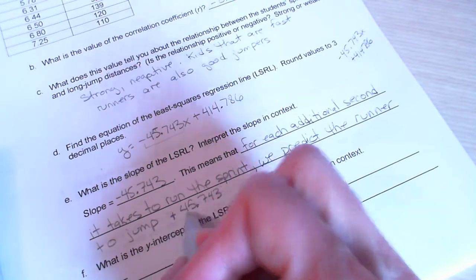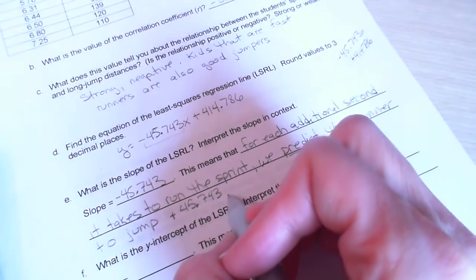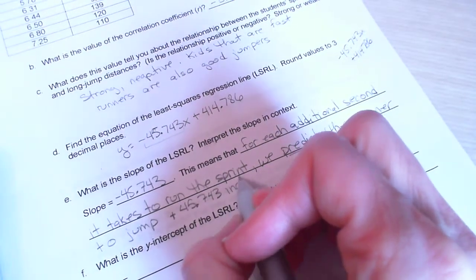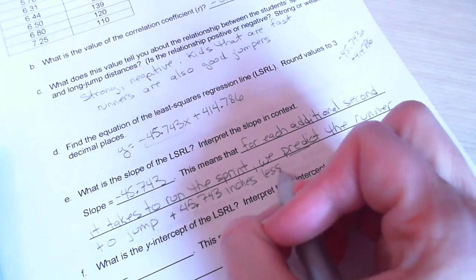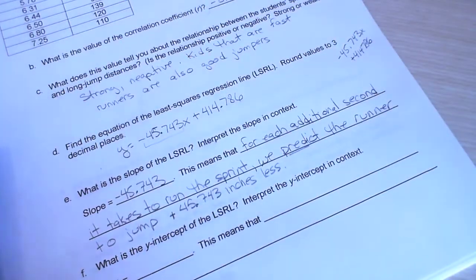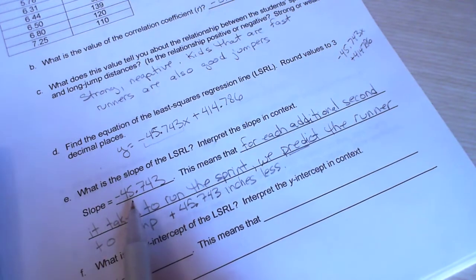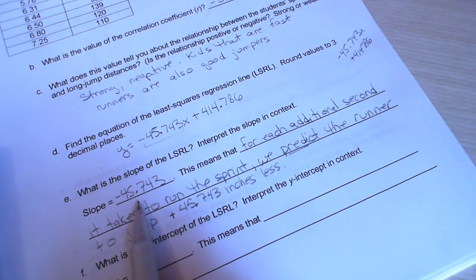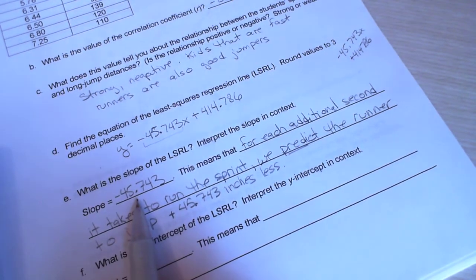Actually, I'm going to take the negative out. I'm going to say 45.743 inches less. A little strange to talk about in the context of this problem, but that's what slope means. For a single increase in x, y will decrease by 45.743.